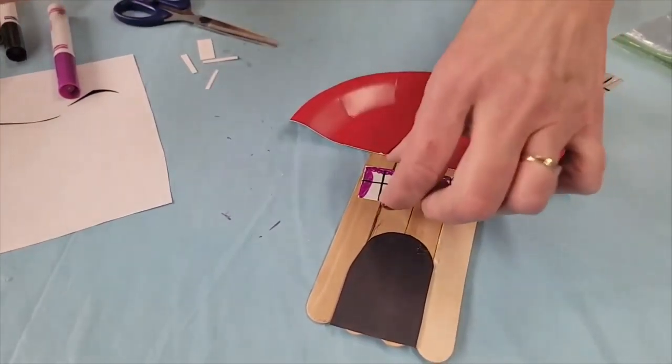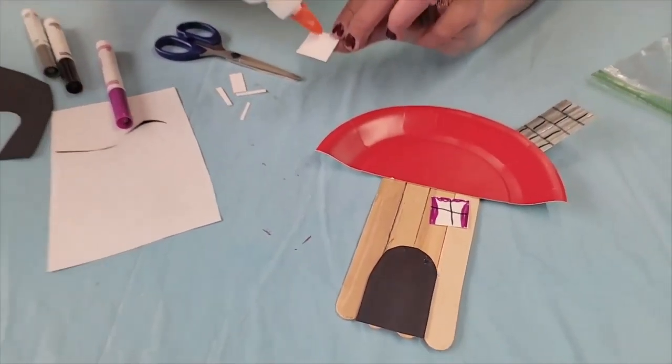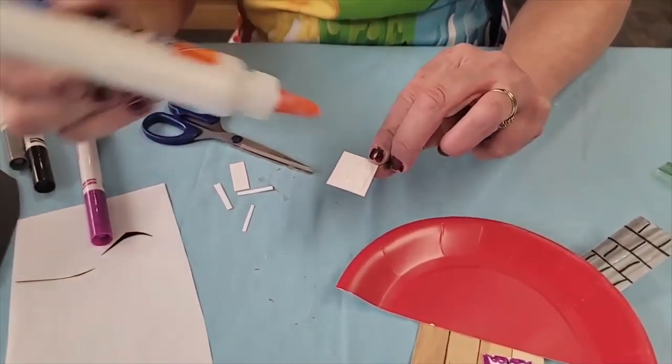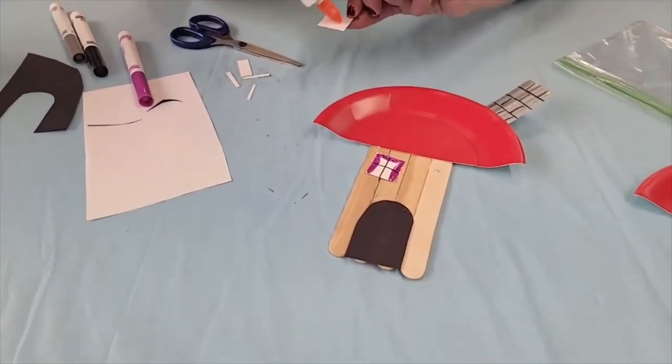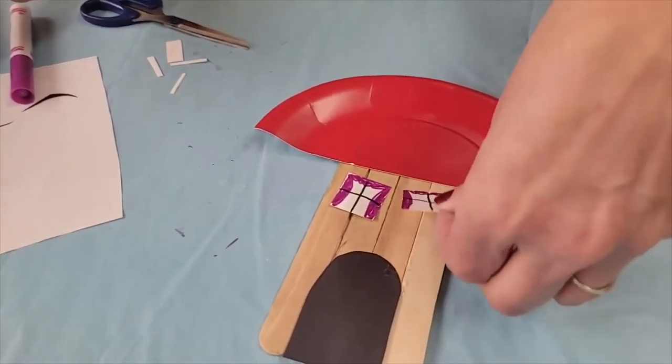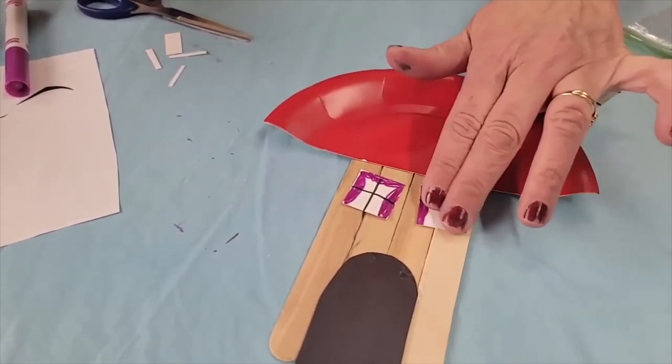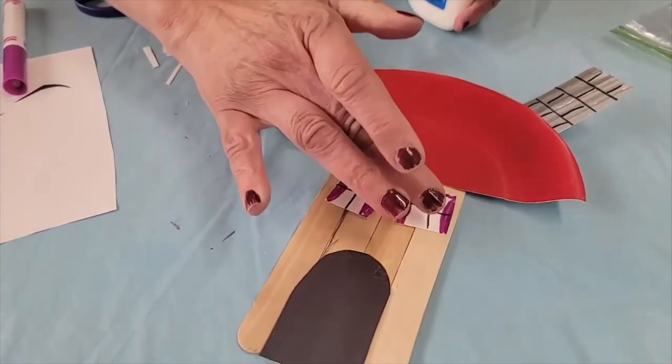So we are going to then take the glue again and scribble. Don't put a big dot in the middle, just put a little glue back and forth on the back side of both of your windows and glue them down.